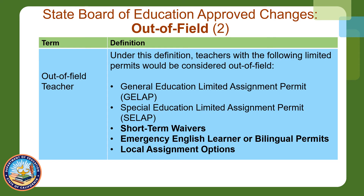The old out-of-field definition only called out General Education Limited Assignment Permit, GLAP, and Special Education Limited Assignment Permit, CLAP, holders as being out-of-field. The revised definition includes the following permits: short-term waivers, Emergency English Learner or Bilingual Permits, and Local Assignment Options, which I will discuss in a moment.